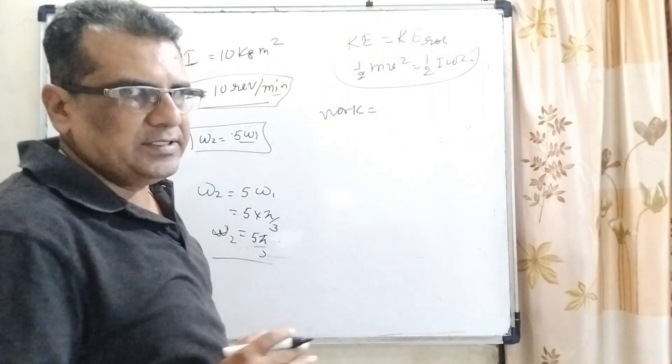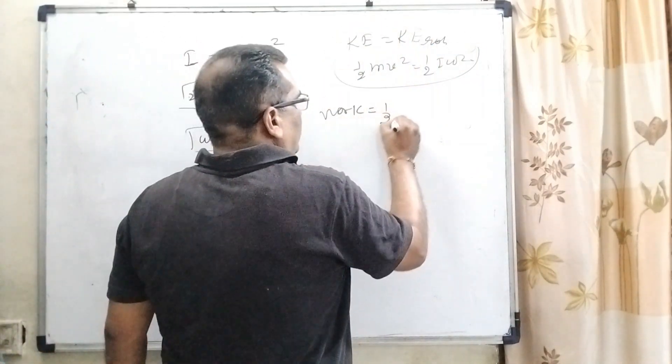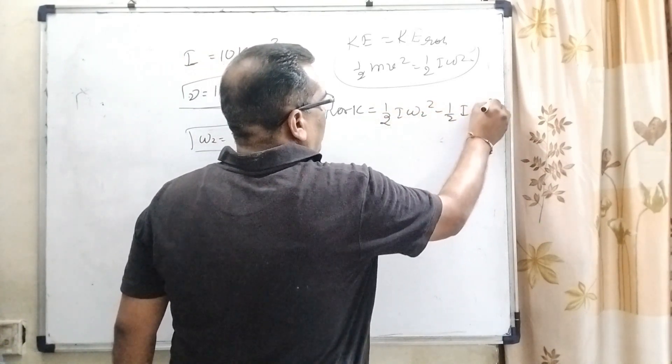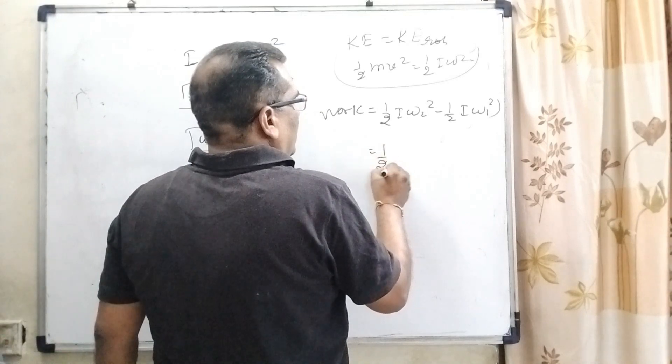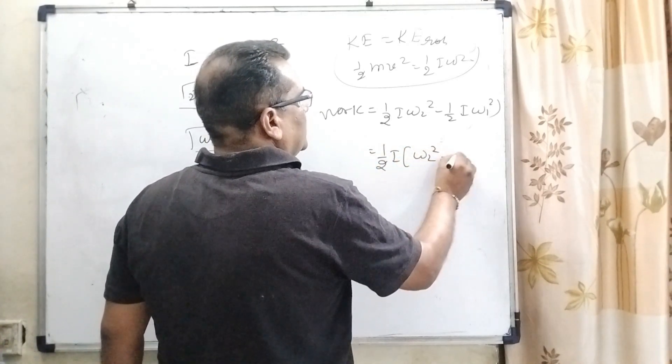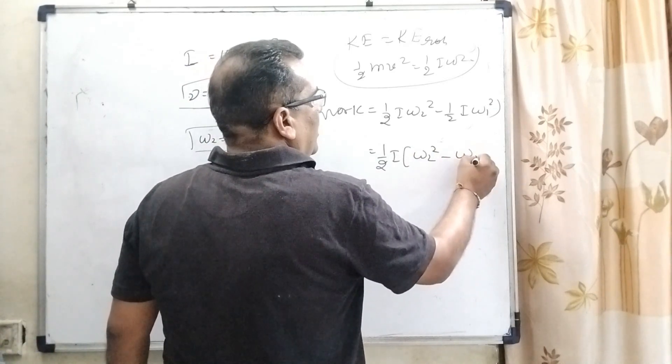1 by 2 mv square can be written as 1 by 2 i omega square. So, here, we have using this concept. So, work equal to 1 by 2 i omega 2 square minus 1 by 2 i omega 1 square. Now, i get common and 1 by 2 get common, omega 2 square minus omega 1 square.